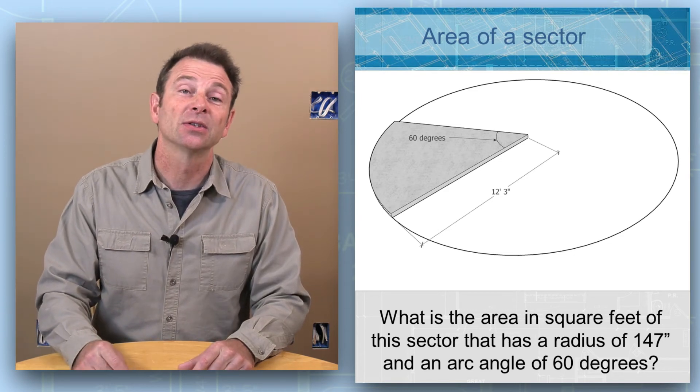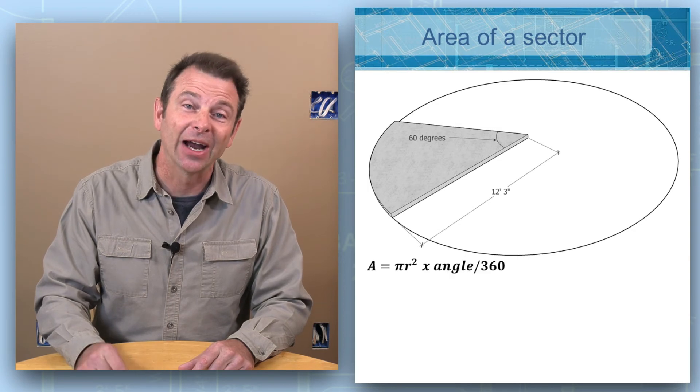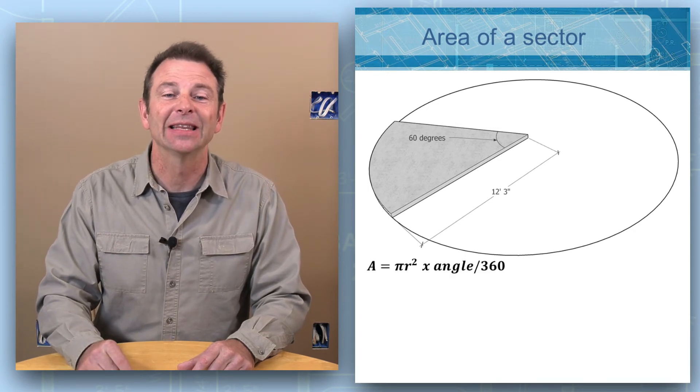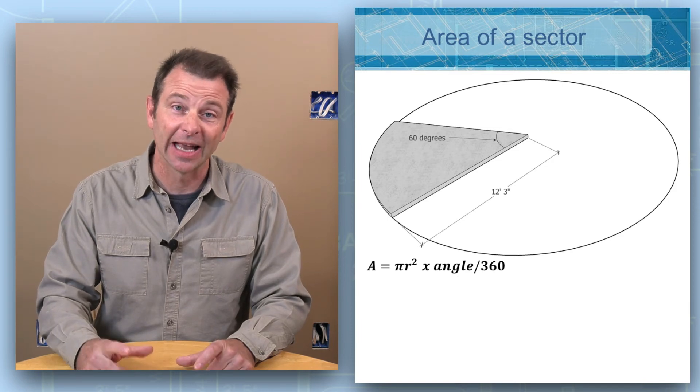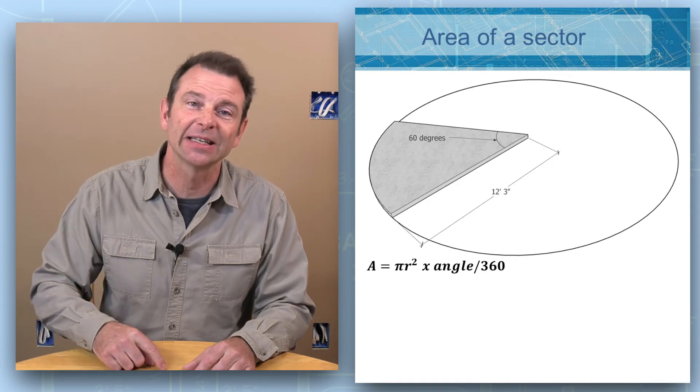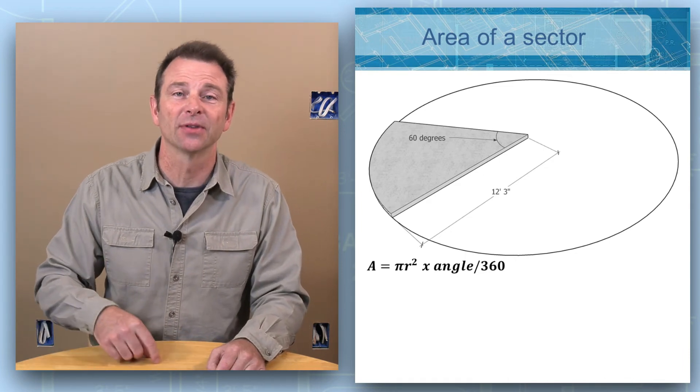Our formula looks very similar to our area for a full circle; it's just a little more complicated. There's a little extra step. So the formula goes: area or A equals pi r squared times the angle...